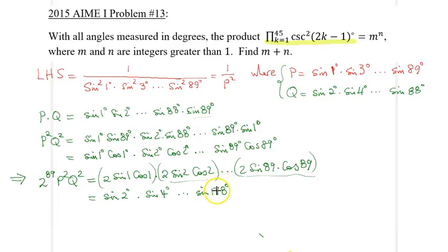And now I will split it along the following lines. That whole thing is just sine 2 degrees times sine 4 degrees all the way to sine 88 degrees, times sine 90 degrees, which is just 1, obviously, and times sine 92 degrees, sine 94 degrees, all the way to sine 178 degrees.